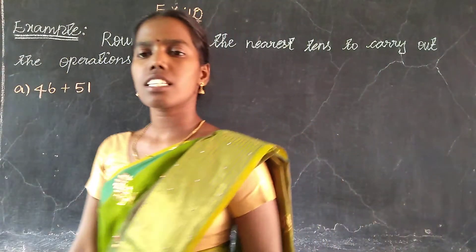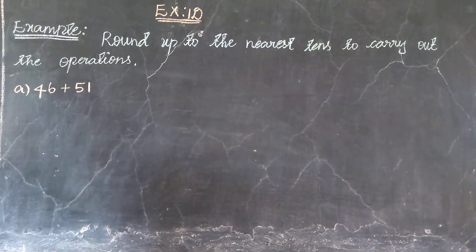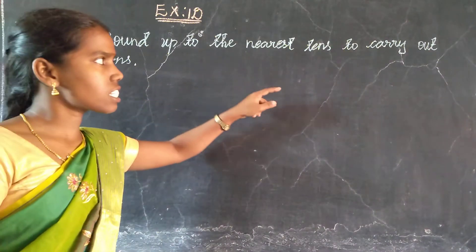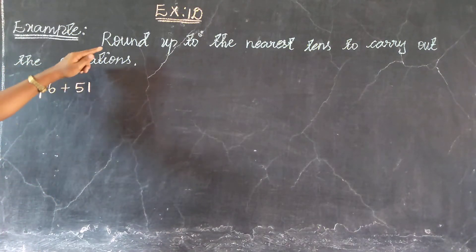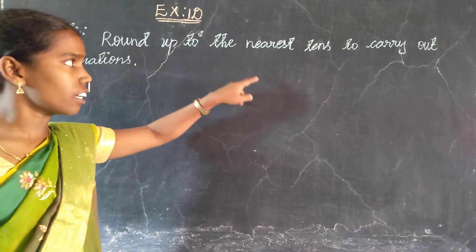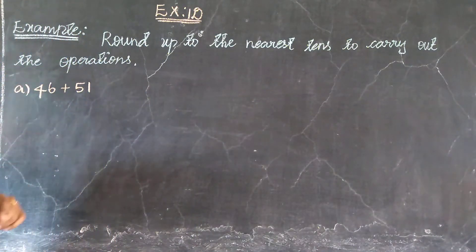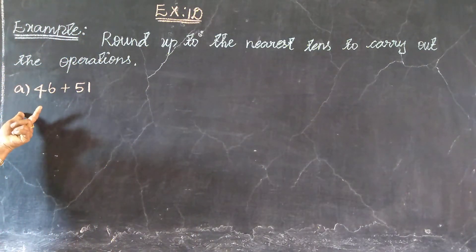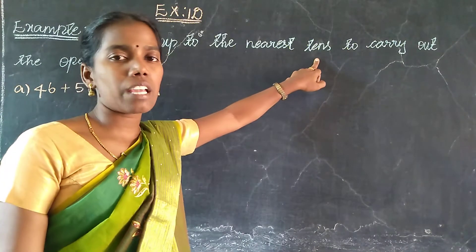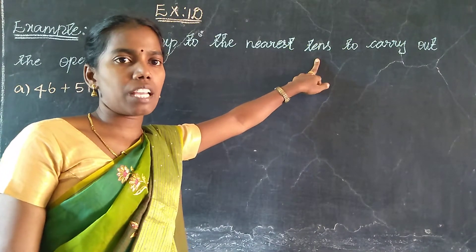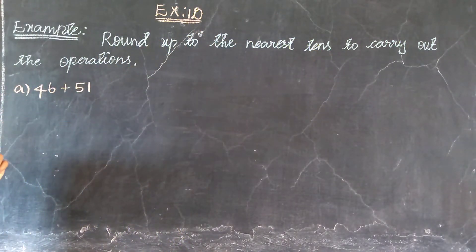Welcome students. This is the example. The problem is to round up to the nearest tens place to carry out the operations. Find the two nearest values up to the tens place. Based on the nearest values, round up.